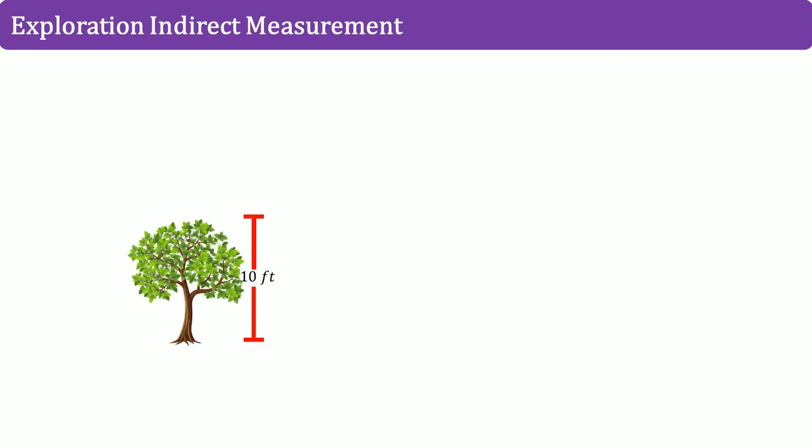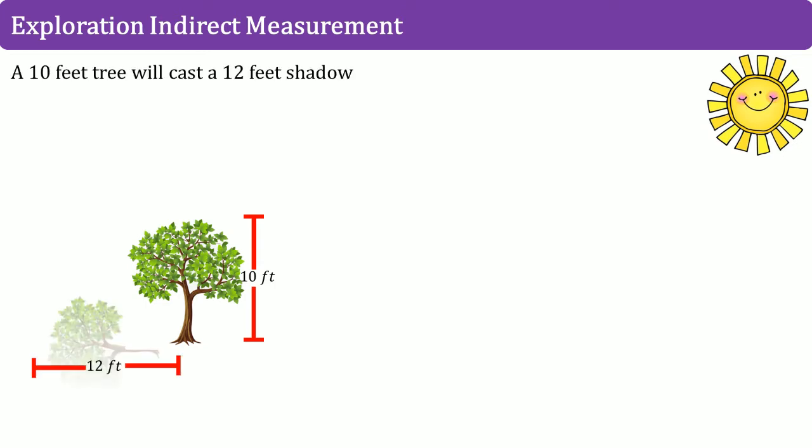Now we're going to explore an indirect measurement. Here you see a tree and it stands at 10 feet high. There's a sun, the sun will cast a shadow on that tree, and that shadow will be 12 feet long.